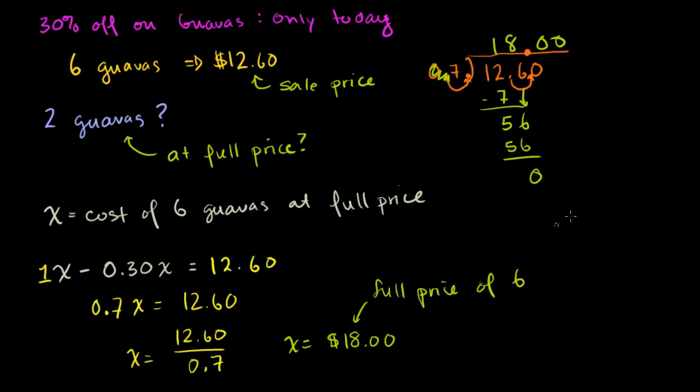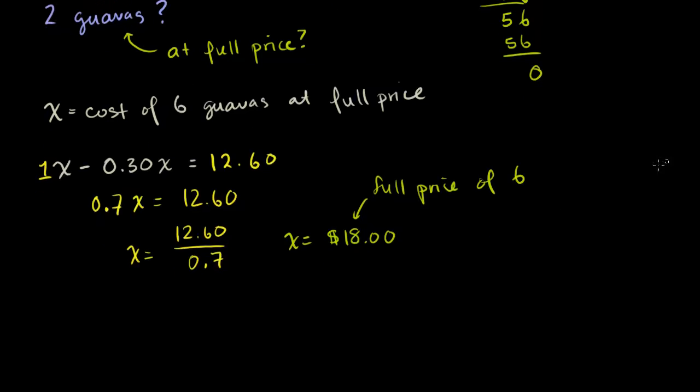So you immediately could figure out what's the full price of one guava. You divide 18 by 6. So 18 divided by 6 is $3. That's $3 per guava at full price. And they're asking us, we want two guavas. So two guavas is going to be two times $3. So this is going to be $6.